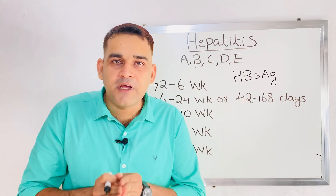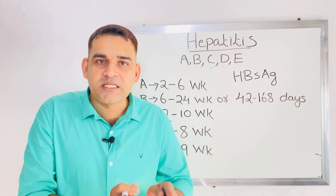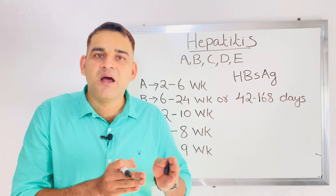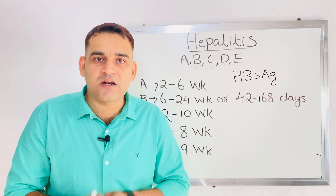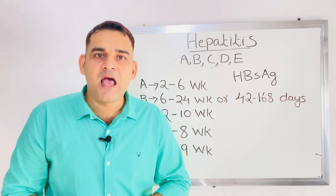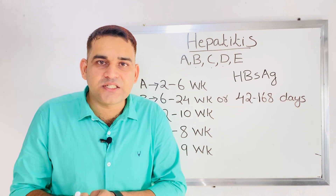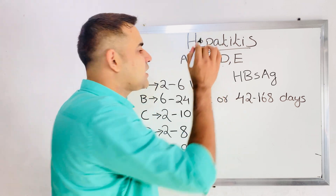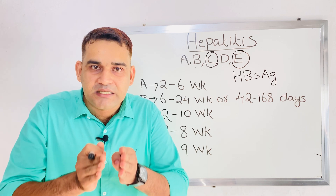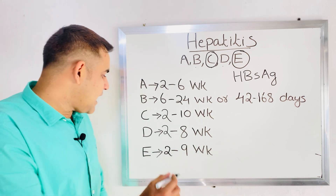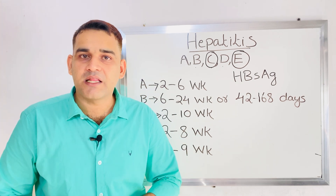To summarize: hepatitis A and E are transmitted via the feco-oral route; hepatitis E is the waterborne hepatitis. Hepatitis B, C, and D are transmitted via blood and blood products. Highest risk of hepatitis B is in hemodialysis patients. Hepatitis C leads to liver cancer or cirrhosis. Hepatitis D is a complication of B. Vaccine is not available for hepatitis C or E. The incubation period of hepatitis E is 2 to 9 weeks.